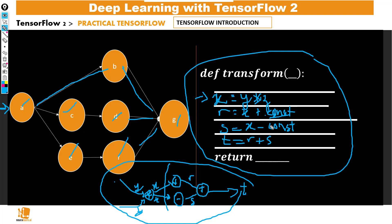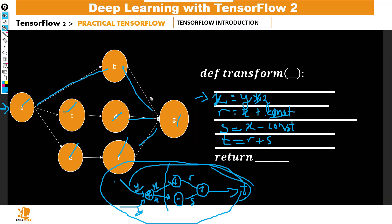One advantage of working with graph mode is that the code becomes portable — in a case where you don't have the Python interpreter, you now have this data structure which can be used in any environment. Another advantage is that since we're dealing with this data structure, it can be broken into separate blocks, making it easy for parallelization and leading to faster computations on devices like GPUs.